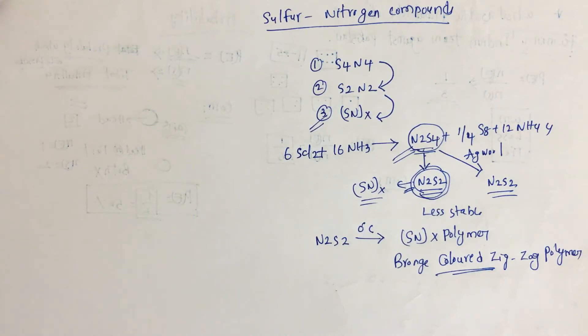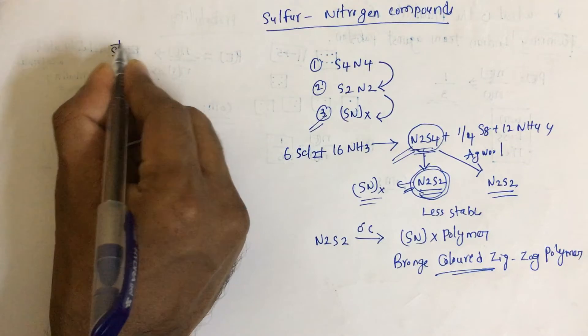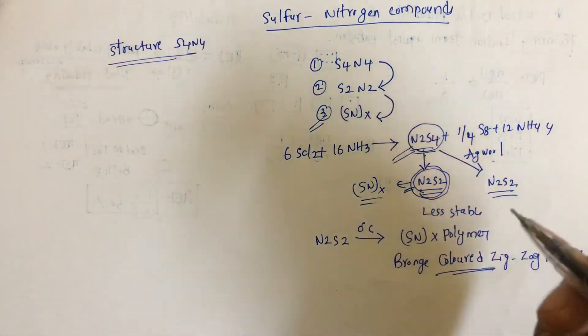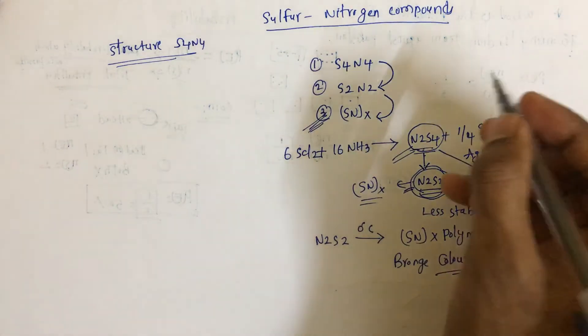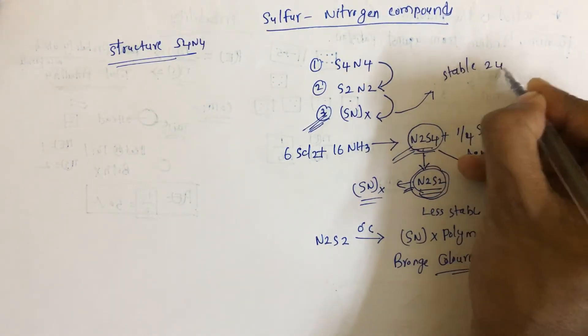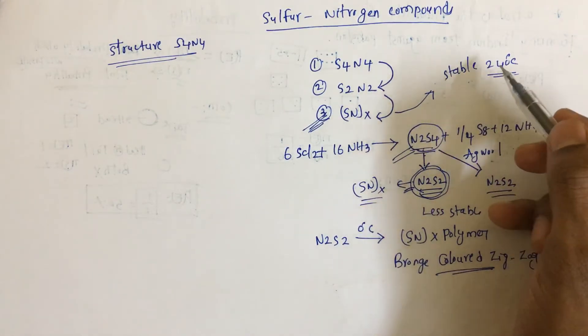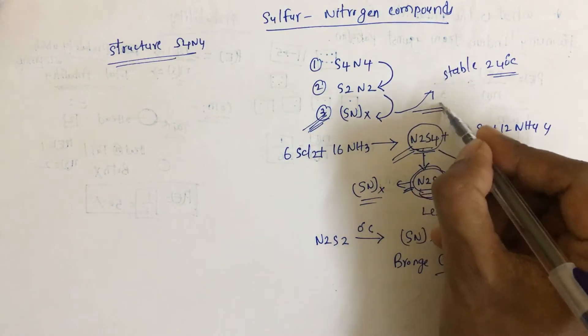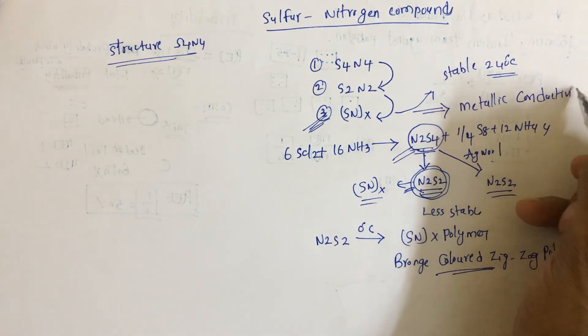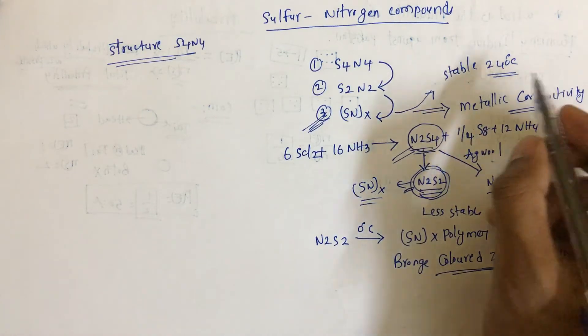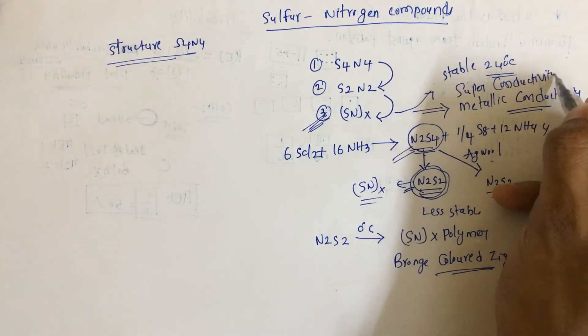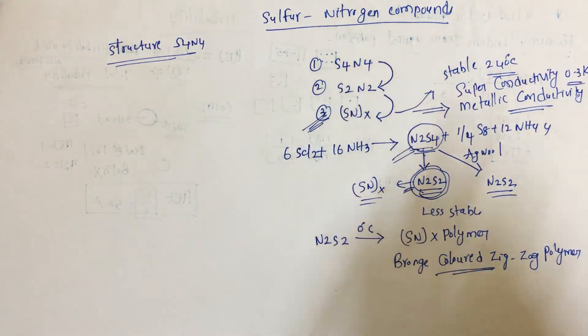Now we'll go for the structure of S4N4. The main important thing is SNx. Why is it very important? This component is stable up to I think 240 degrees centigrade. This conducts metallic conductivity and also becomes superconducting at 0.3 Kelvin.